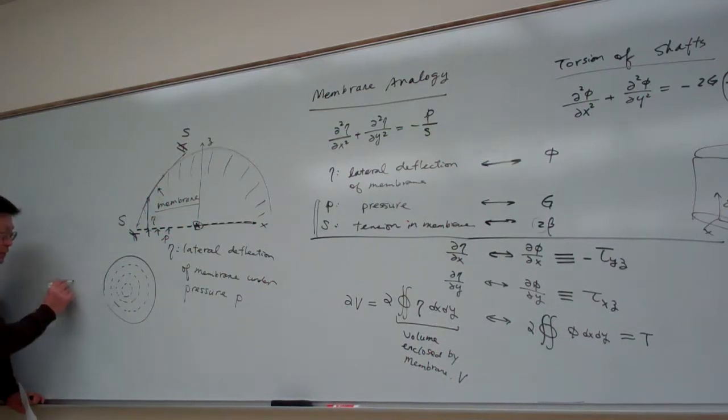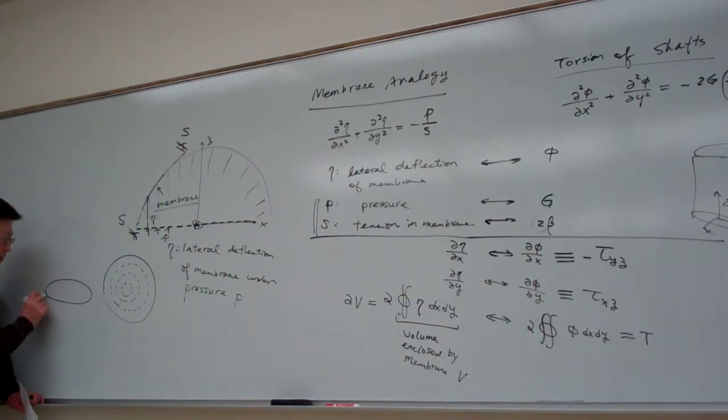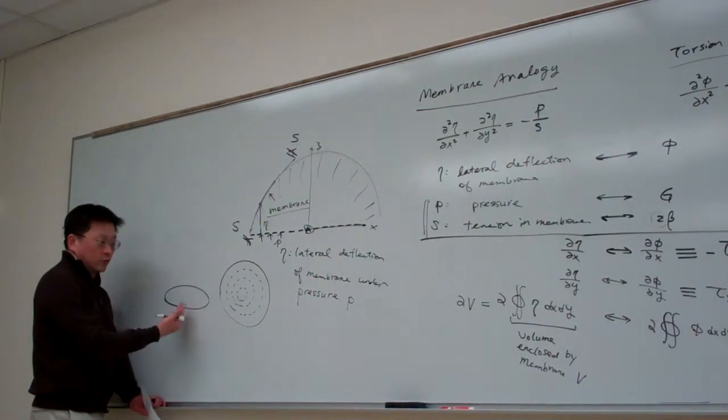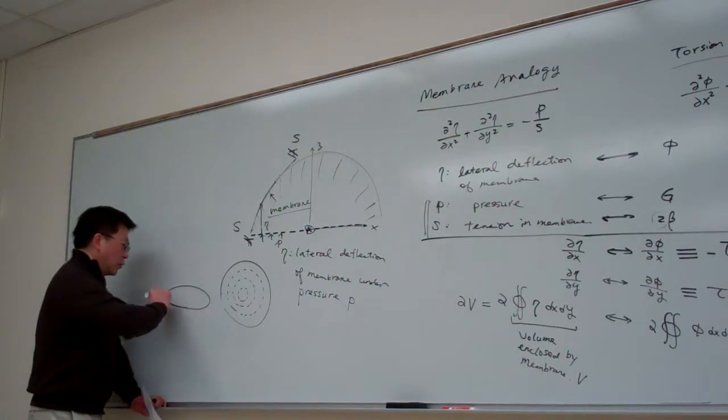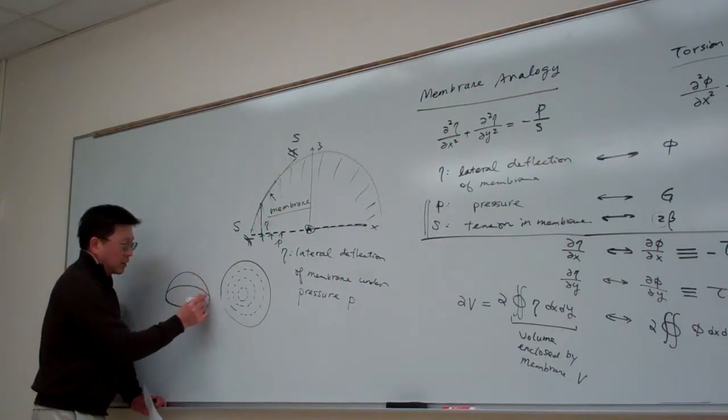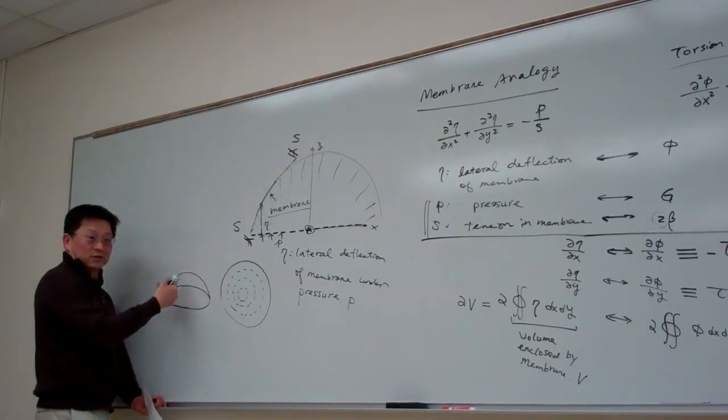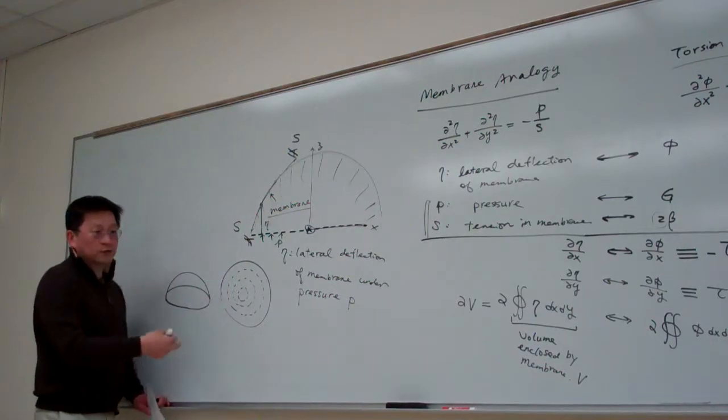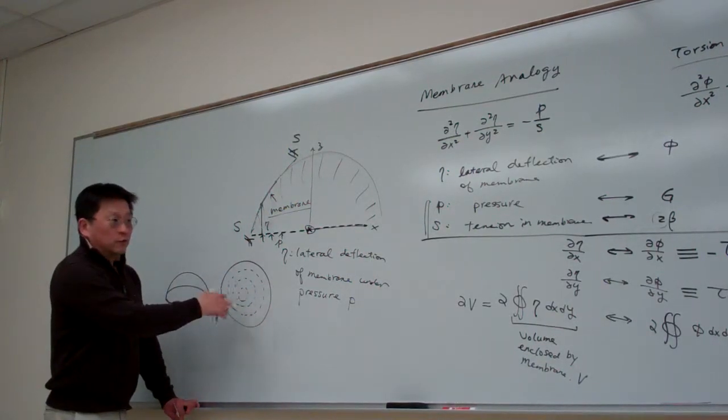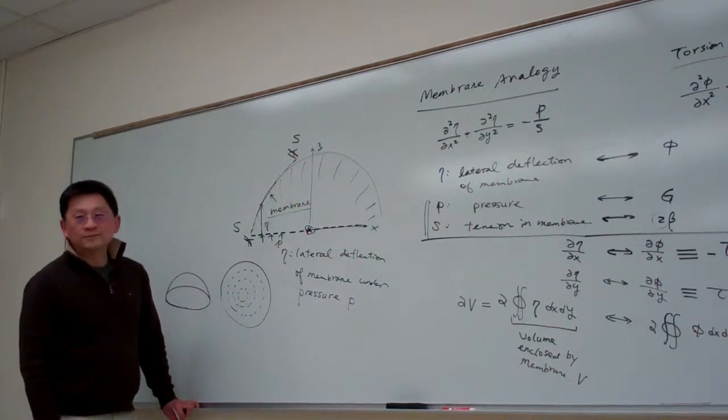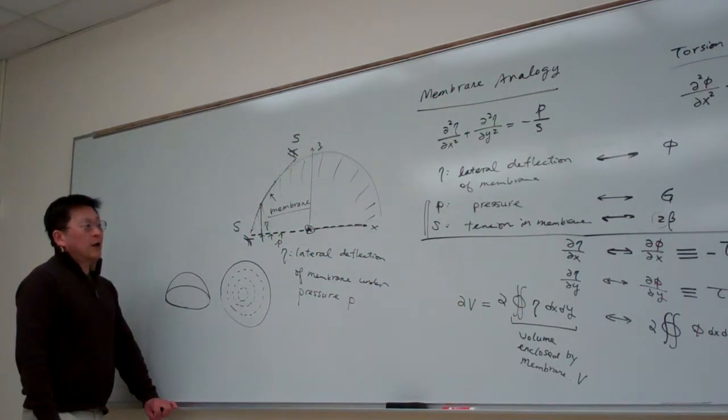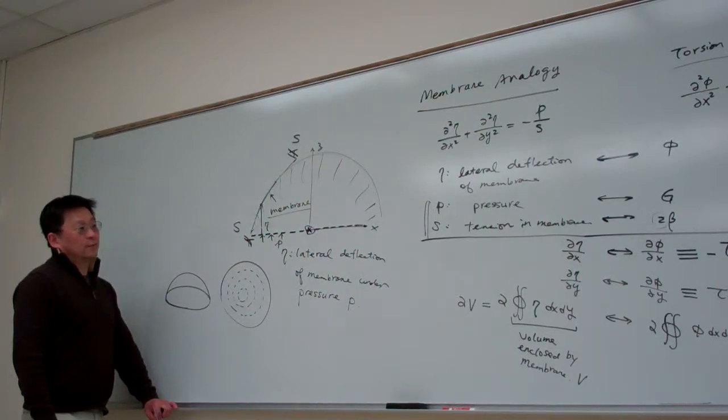For example, let me draw in 3D view. So if this is the metal ring, we have a flat membrane before I apply pressure from underneath. Once the pressure is applied, then the membrane will bulge in that direction, something like this shape. So in this way you can imagine, basically that is a level curve or the contour for this one.